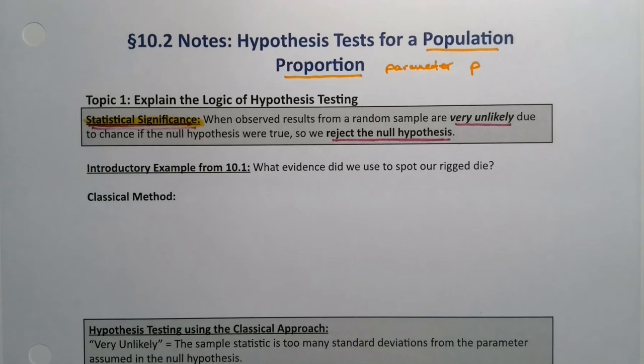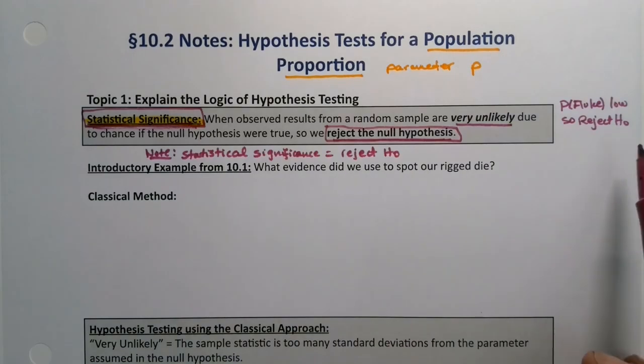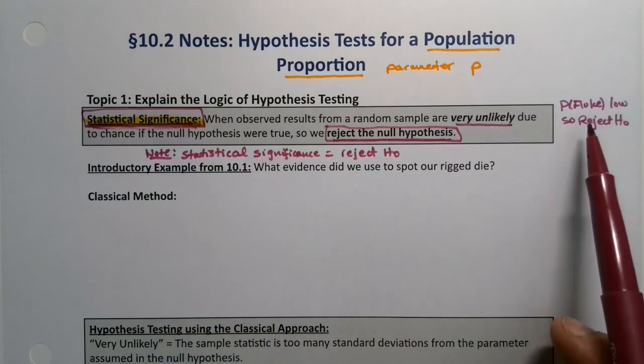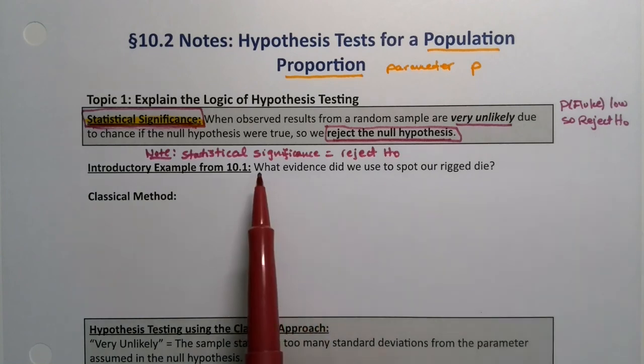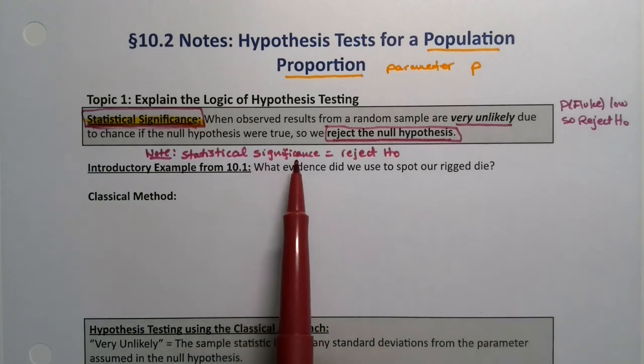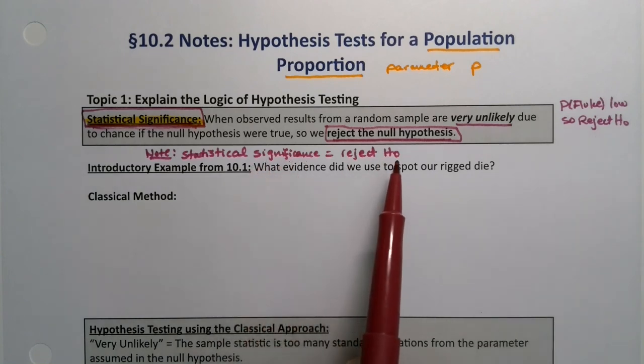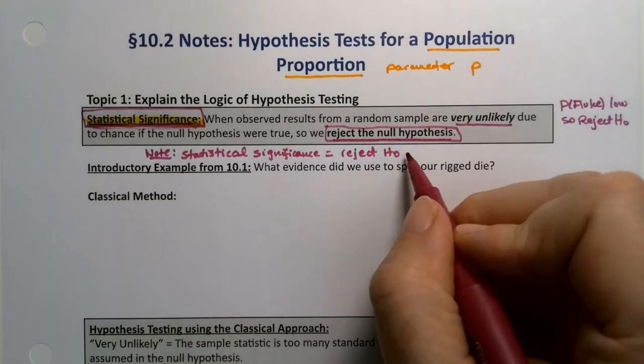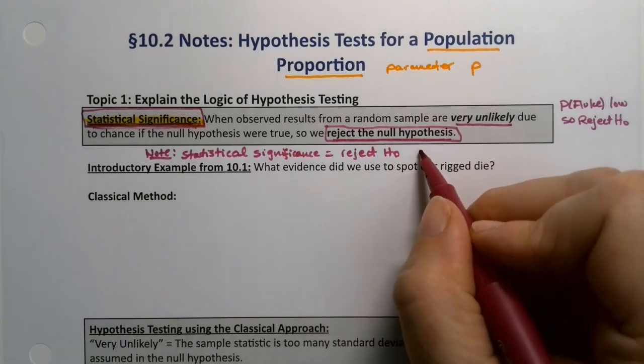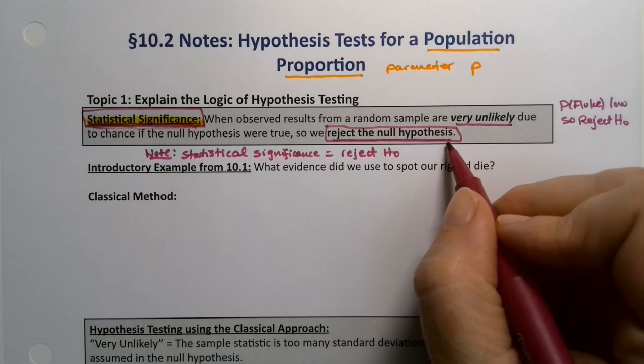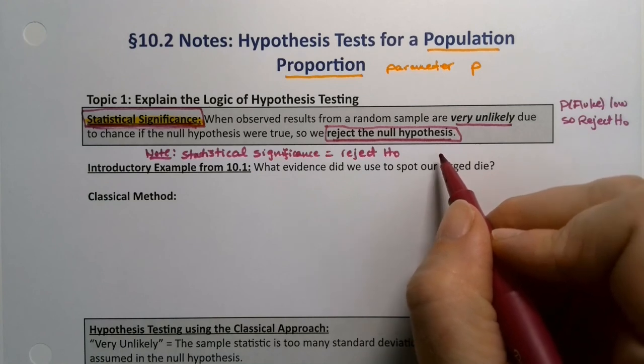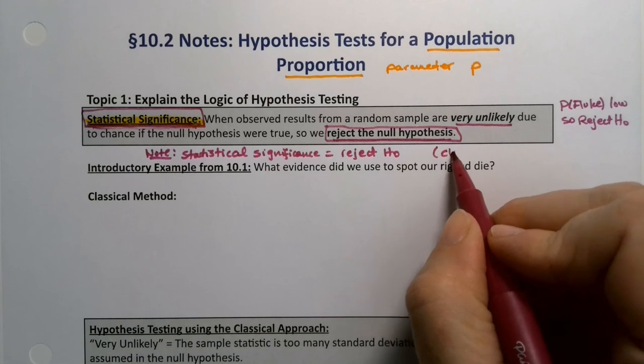When the probability of a fluke is too low, we reject H₀, and that is statistically significant. Statistical significance means rejecting the null hypothesis, because our claim is always in H₁. The null hypothesis is always the status quo, and the alternative hypothesis is always our claim.